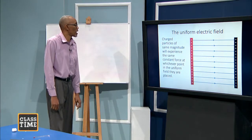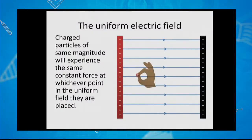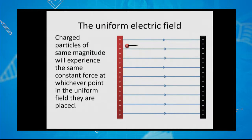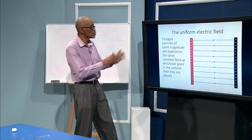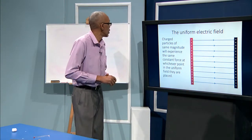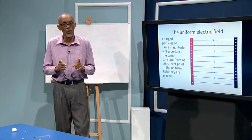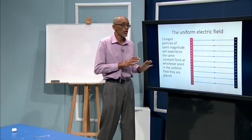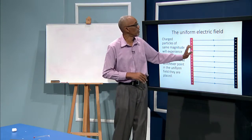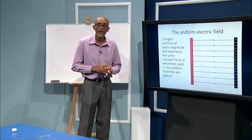Charged particles of the same magnitude will experience the same constant force at whichever point in the uniform field they are placed. If you place a charged particle here, it will experience a force and be caused to accelerate. Wherever in a uniform field you put a charged particle, it will experience a constant force which will cause it to accelerate. Even though the force may be in opposite directions for positive and negative charges, they will all experience the same magnitude of force.